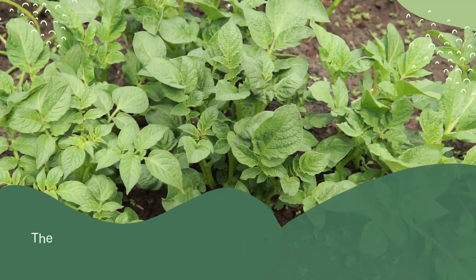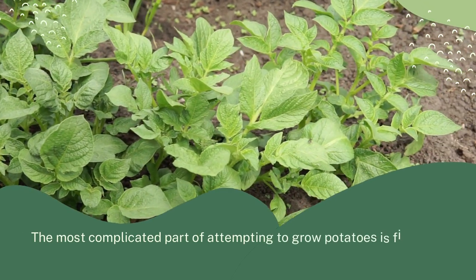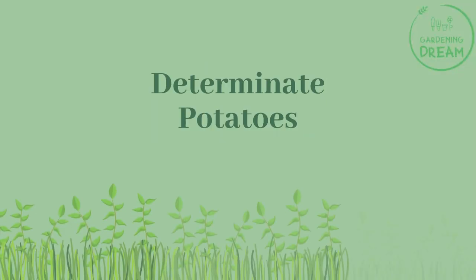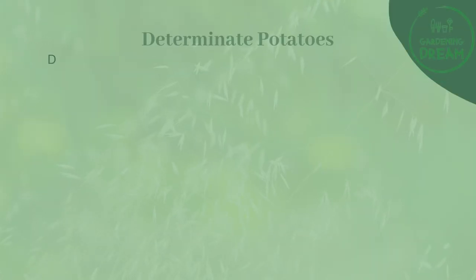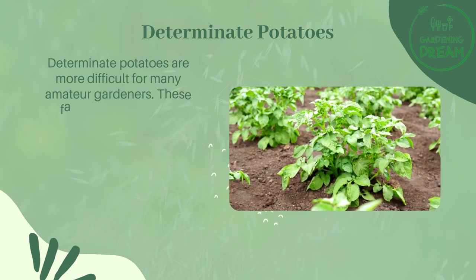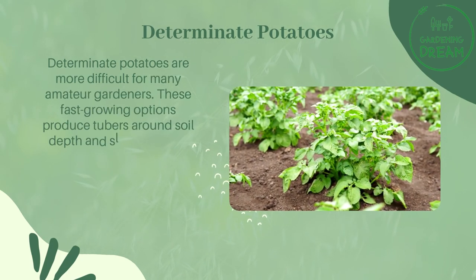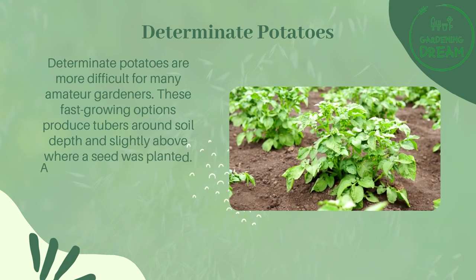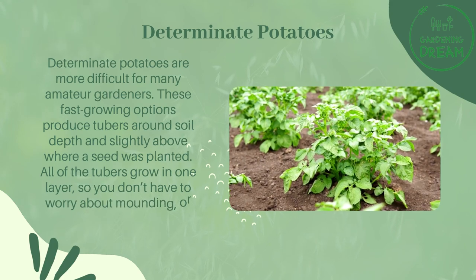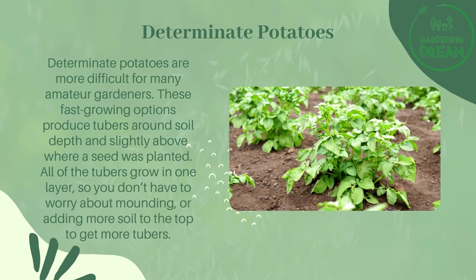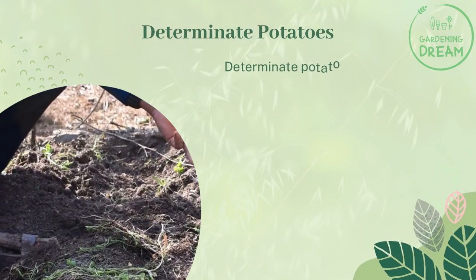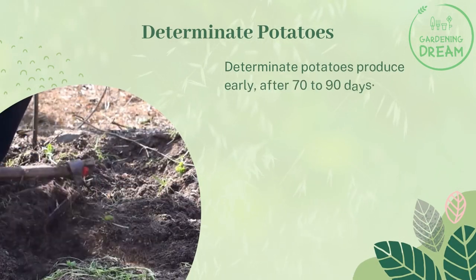The most complicated part of attempting to grow potatoes is figuring out whether a species is determinate or indeterminate. Determinate potatoes are more difficult for many amateur gardeners. These fast-growing options produce tubers around soil depth and slightly above where a seed was planted. All of the tubers grow in one layer, so you don't have to worry about mounding or adding more soil to get more tubers. Determinate potatoes produce early, after 70 to 90 days.